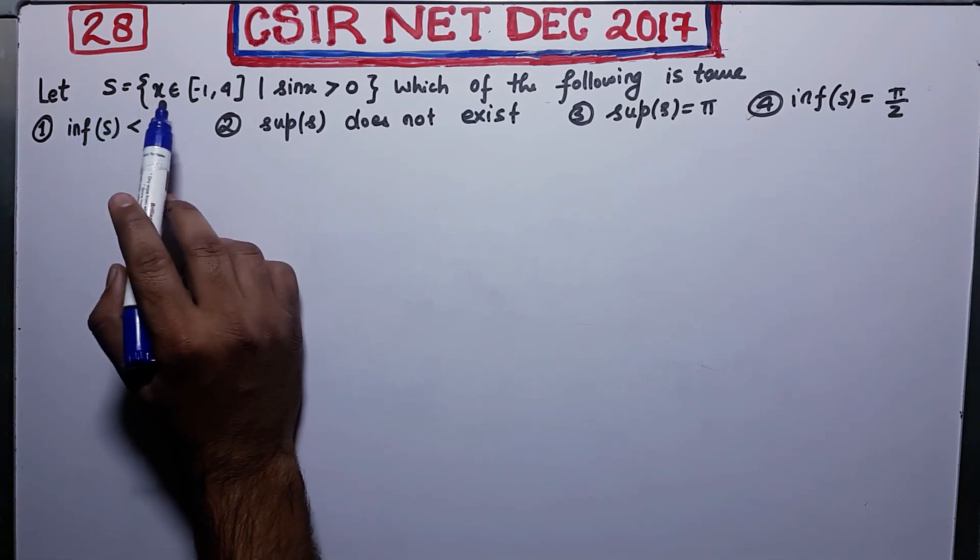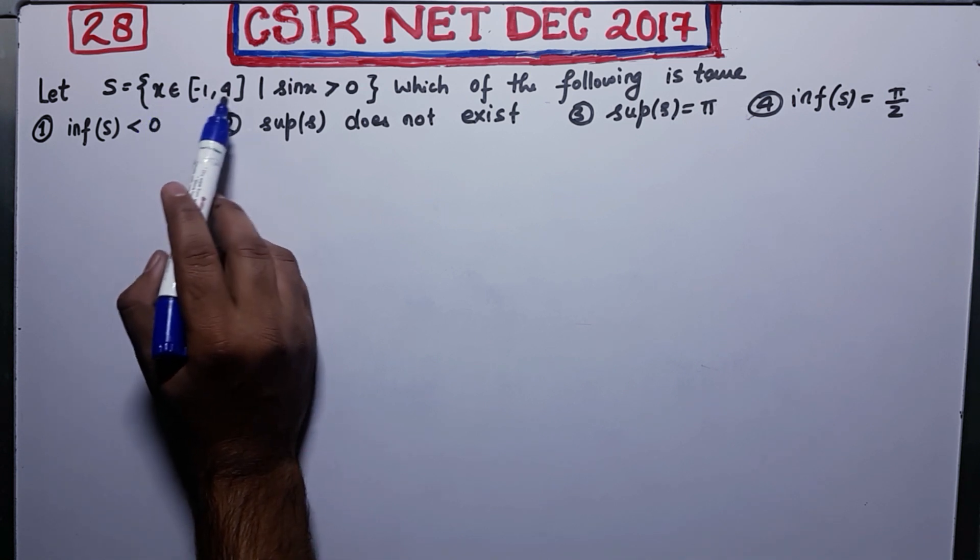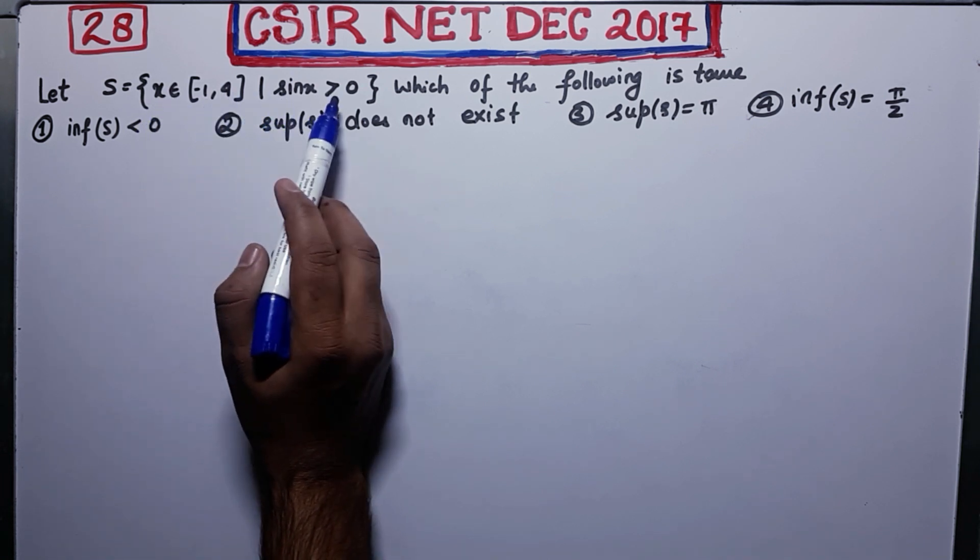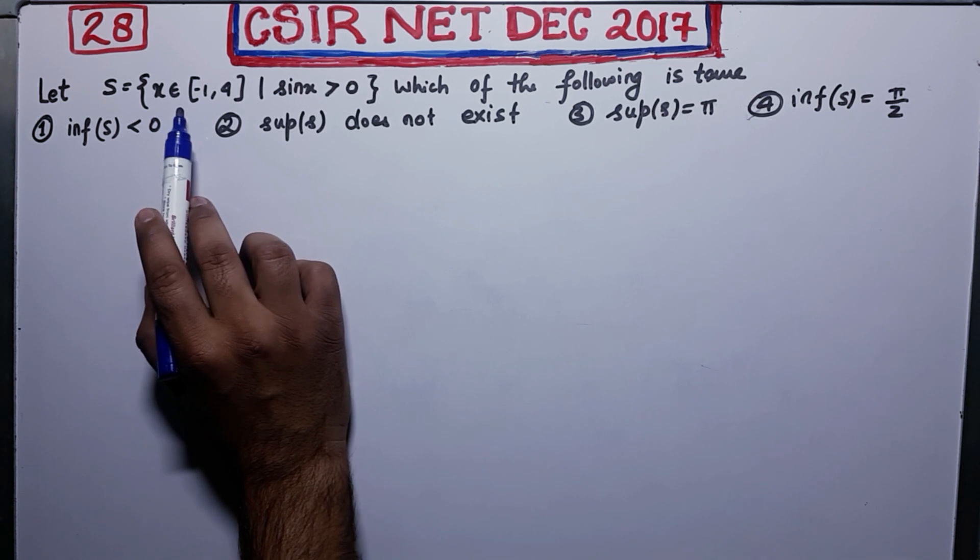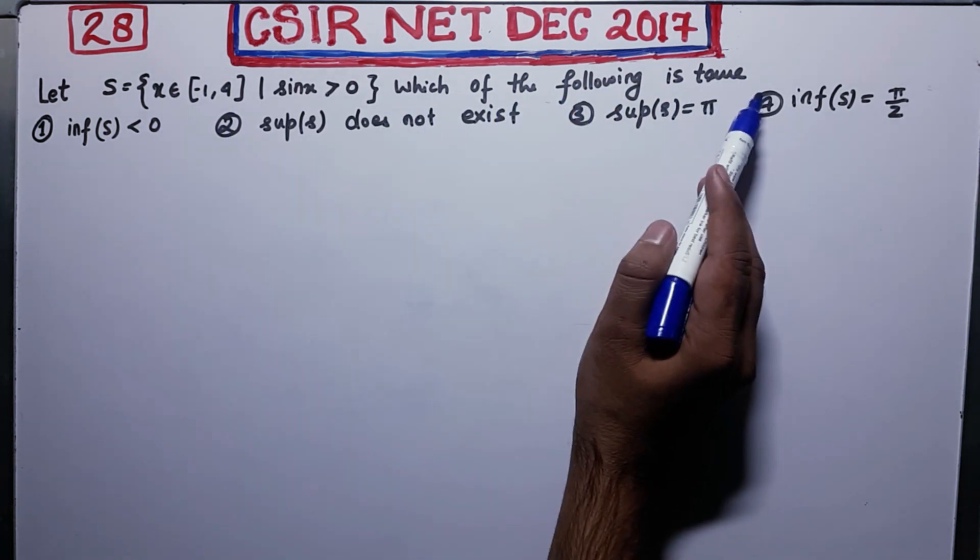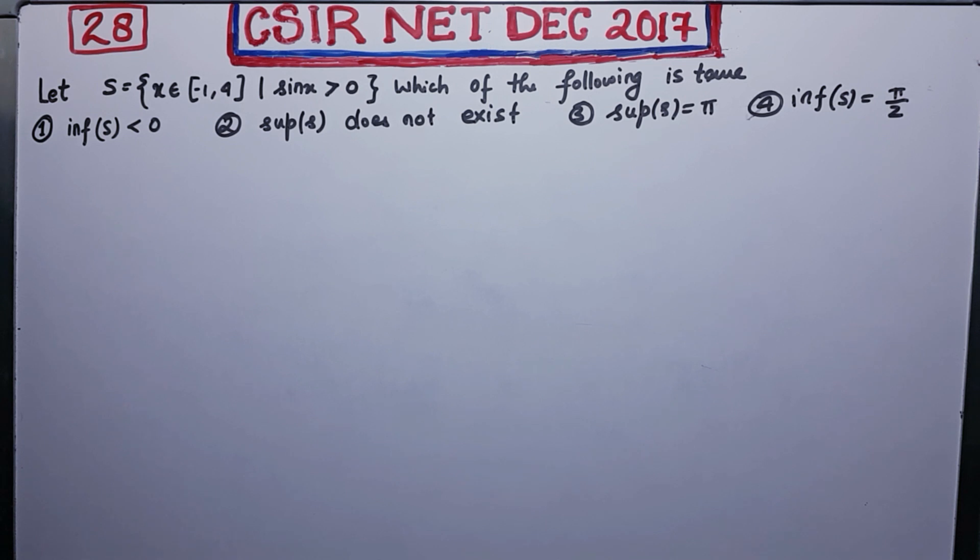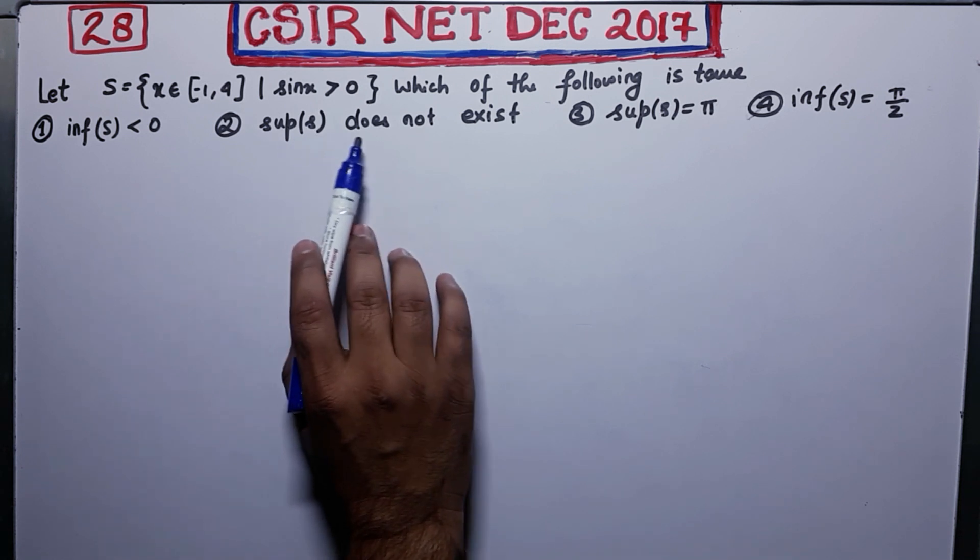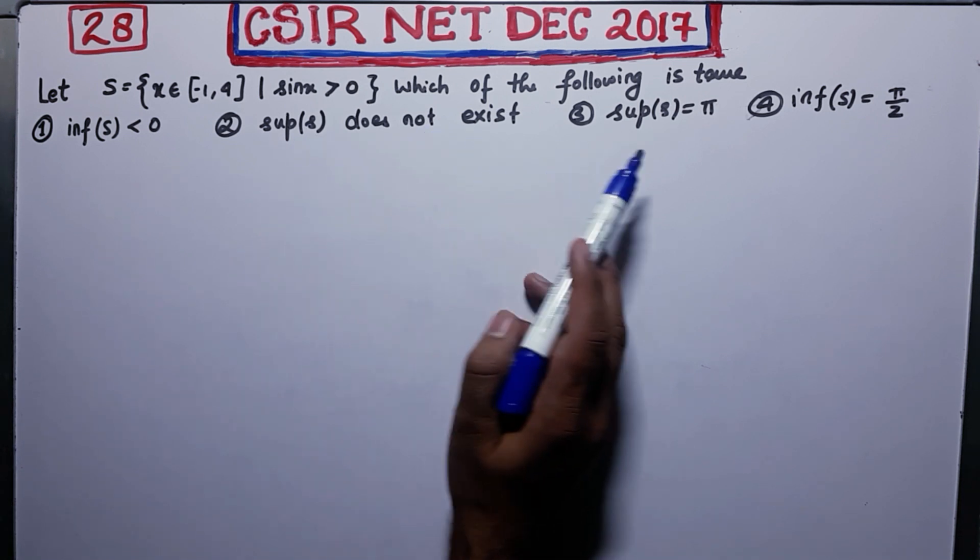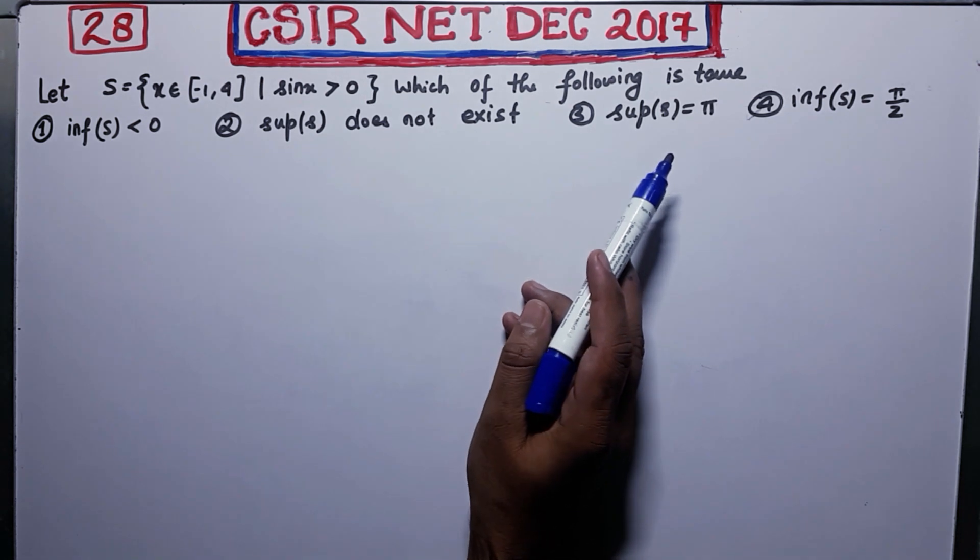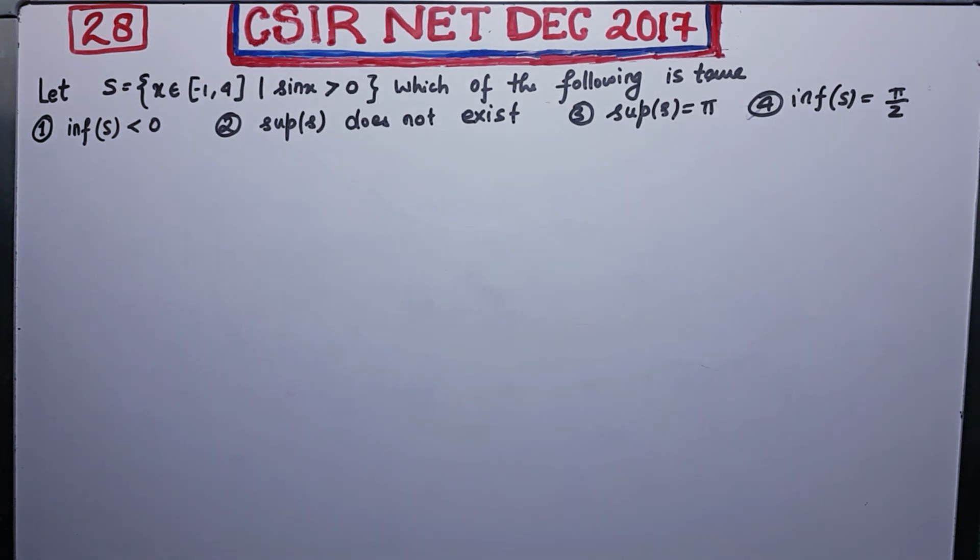Let S equal to x belonging to this interval with the given condition that sin x must be greater than 0 for that x. Which of the following is true? So it says infimum is less than 0. Second one says supremum of S does not exist. Third one says supremum of S is equal to π. And fourth one says infimum of S is equal to minus π by 2.